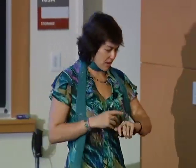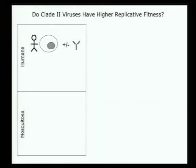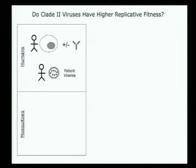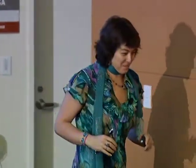So the questions are: are the clade 2 viruses more fit, and is clade 2 associated with an increase in disease severity? To look at viral fitness in the laboratory, we use human cell lines, primary human dendritic cells derived from PBMCs, actual patient viremia data, mosquito cell lines — C636 from Aedes albopictus — and real mosquitoes, bringing Aedes aegypti from Nicaragua to our collaborating labs in Albany, New York.